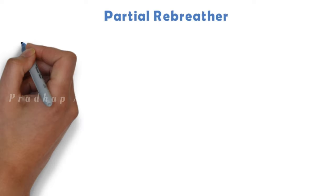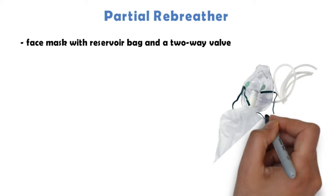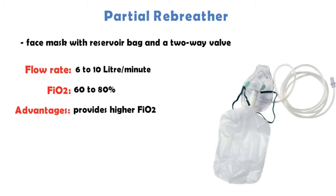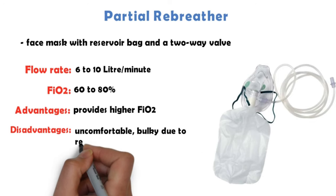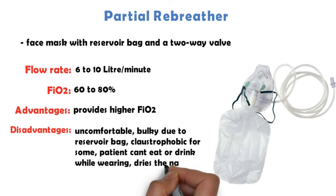Partial rebreather — a face mask with a reservoir bag and a two-way valve that allows some of the exhaled air to enter the reservoir bag. This air, which contains some oxygen, is reused, thereby increasing the amount of oxygen the patient receives. Flow rate: 6–10 liters per minute. FiO2: 60–80%. Advantages: provides higher FiO2 than a simple face mask. Disadvantages: uncomfortable, bulky due to the reservoir bag, claustrophobic for some, patient can't eat or drink while wearing it, dries the nares, and may not fit well.